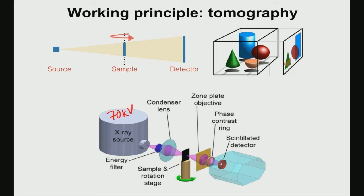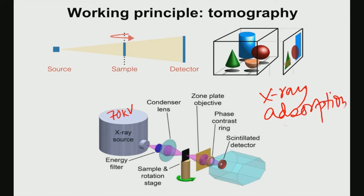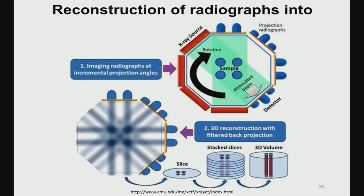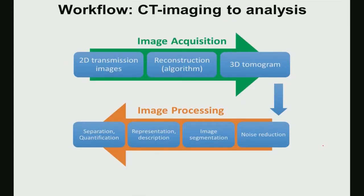In micro-CT, the 3D scaffold is rotated 360 degrees, and each time the X-ray beam passes through, a 2D slice is recorded at the detector. These 2D slices are stacked in the Z direction to reconstruct the full 3D scaffold. Image acquisition is relatively straightforward — you adjust accelerating voltage and resolution. The more difficult part is image processing, which requires extensive expertise to extract meaningful data.